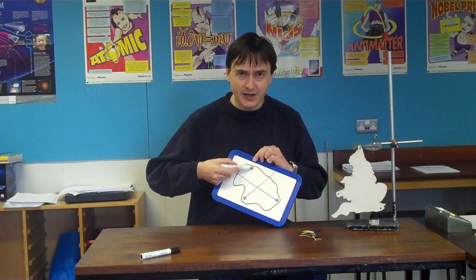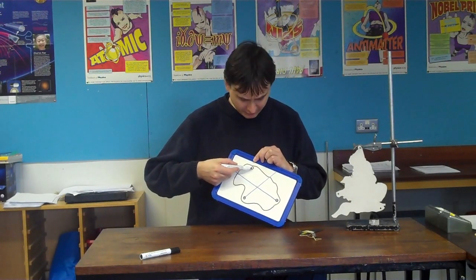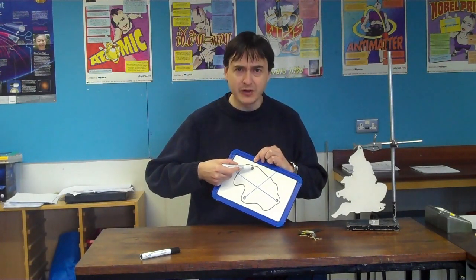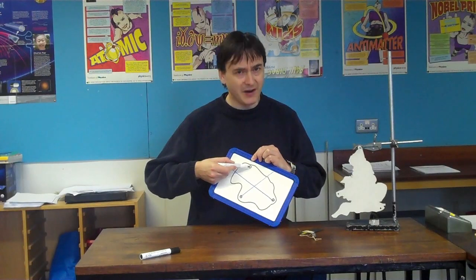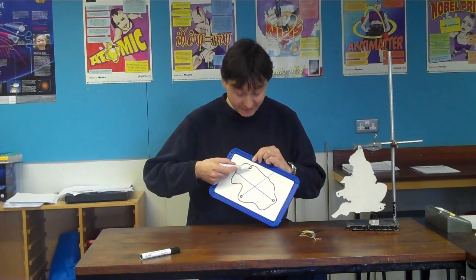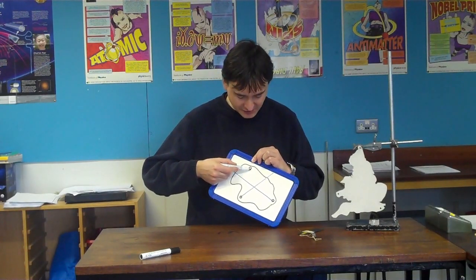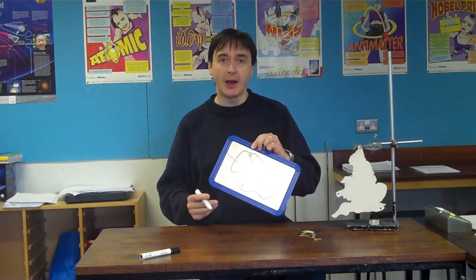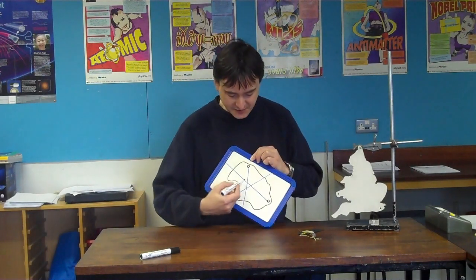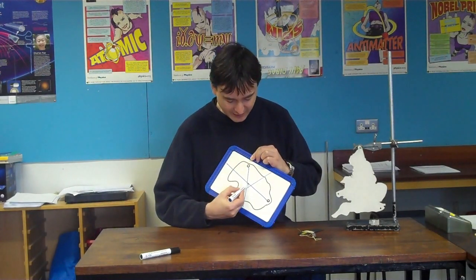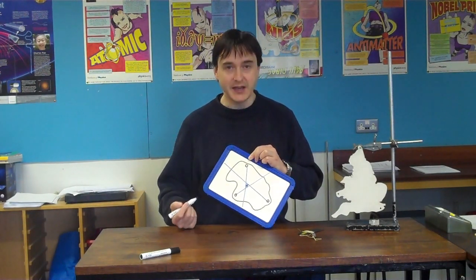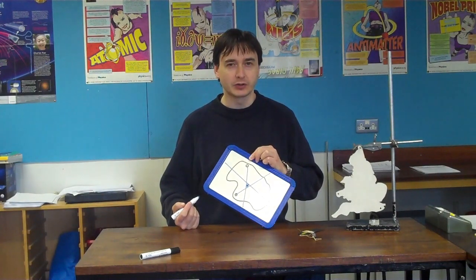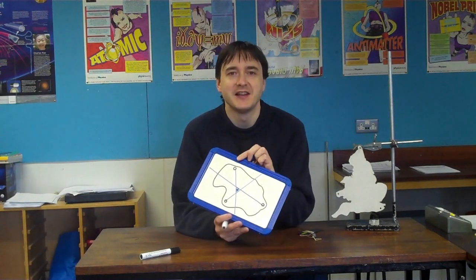However, as you probably realise, when you do experiments, it's very unlikely — in fact, impossible — that you'll ever get the same results exactly. And so, in general, what happens with this experiment is that you actually get the three lines missing each other and forming a triangle, like that.